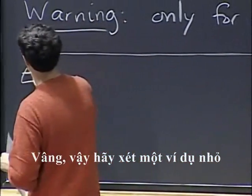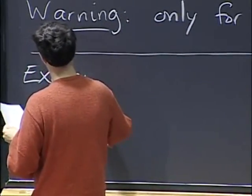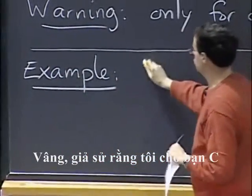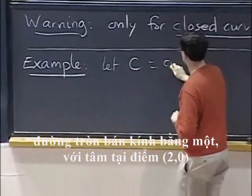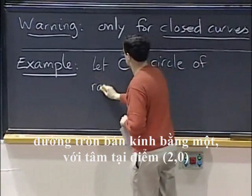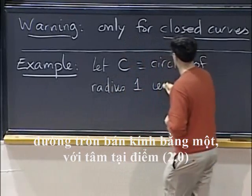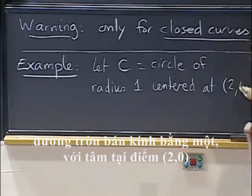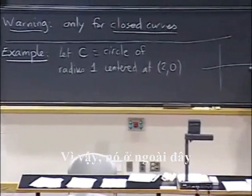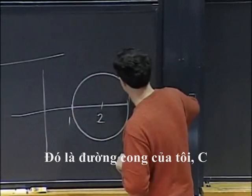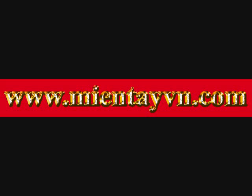Let's do a quick example. Let C be the circle of radius one centered at the point (2, 0). So it's out here — that's my curve C.